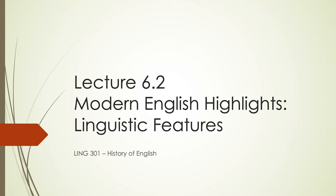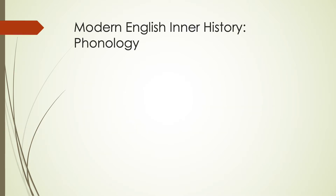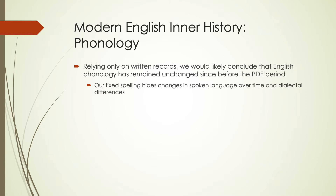We'll see what sort of things have changed from the early modern period into what brings us into today. With phonology, if we think back and we are trying to rely only on written records, we would probably conclude that English phonology hasn't really changed since before this time period — since the early modern period — because of our fixed spelling. The fixed spelling hides changes in our spoken language over time and hides all of these dialectal differences.